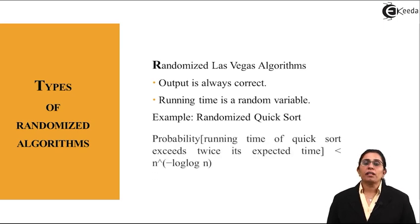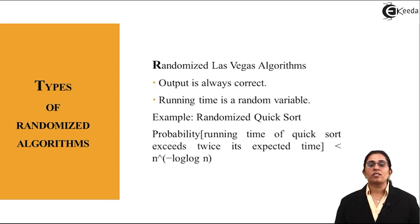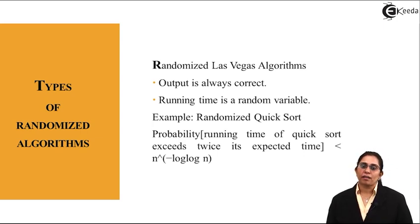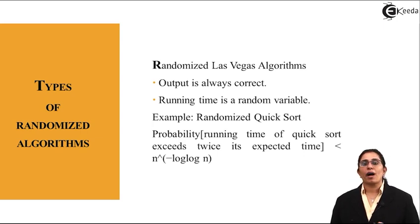The probability or the running time for the quick sort exceeds twice the expected time is less than n raised to the power of minus log log n. So we see how much it is reduced.